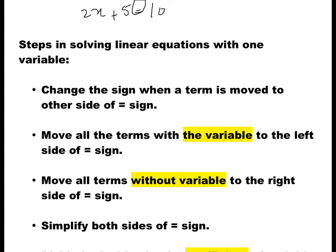I'm going to say move the variable to the left of the equal sign. This doesn't mean you have to have it only on the left — you can have it on the right, but all operations will be the other way around. For now, move all terms with the variable to the left side. Remember: whenever you move a term to either side, you change the sign. In this case, I want to keep 2x on the left, which means I have to move 5 to the right.